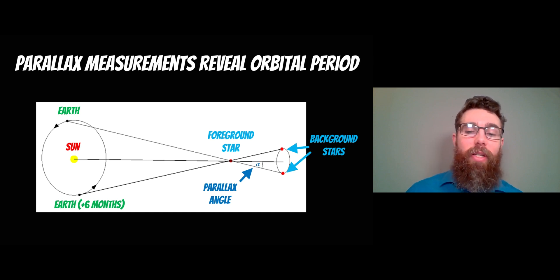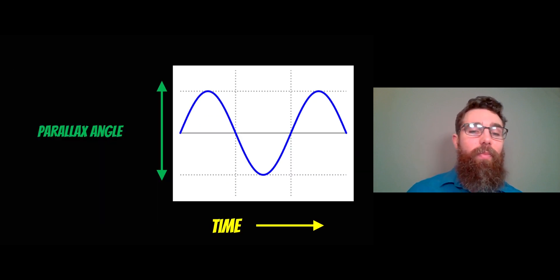This is where we measure the parallax angle over six months. Six months apart, you look at foreground stars (nearby stars) and the relative position of background stars, and you get a parallax angle between them. If you monitor that throughout a year, the parallax angle cycles, and you can measure the orbital period. One full cycle of that parallax angle gives you Earth's orbital period.